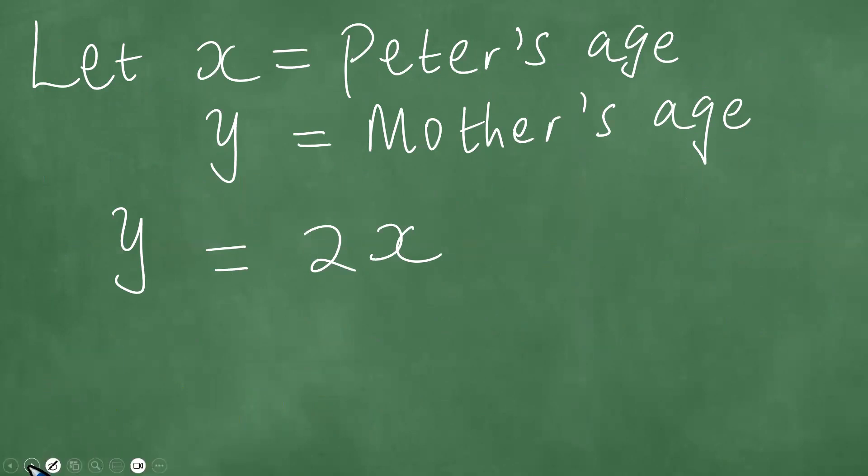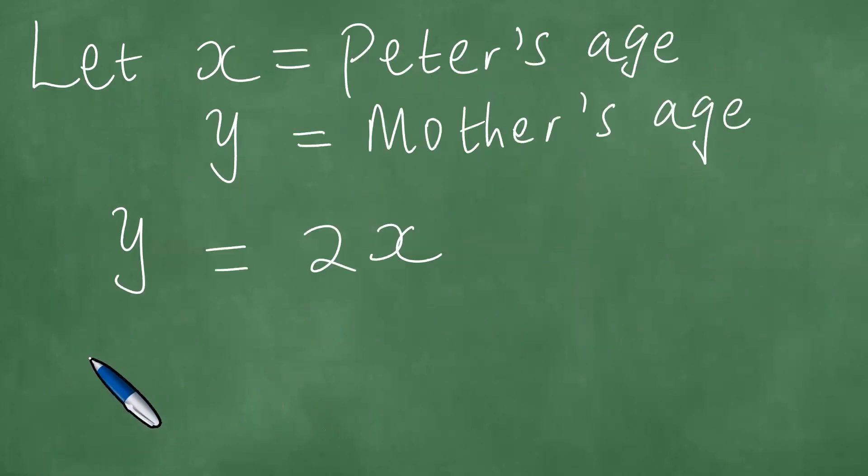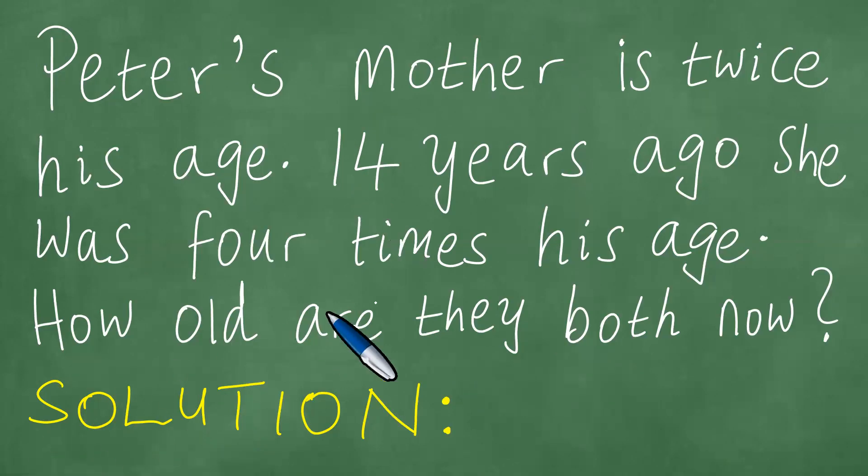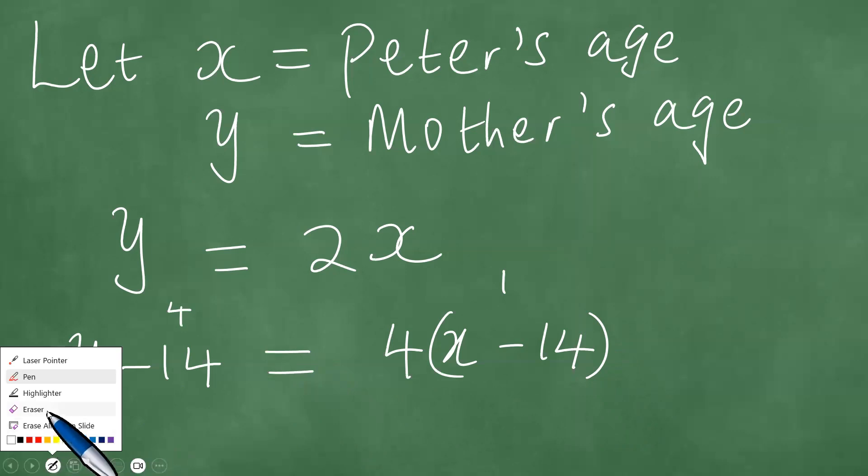Now we proceed to break down the second part of the question. 14 years ago, she was four times his age. So if you go back 14 years, which means we'll say y minus 14 and also x minus 14. But if that is the case, she was four times his age. And therefore, if the mother was four times and this was therefore one, we must multiply the right hand side by four and put an equality there to equate the two parts.